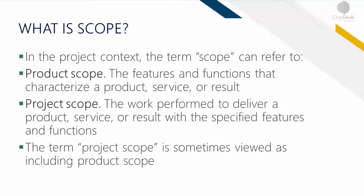In the real world, you typically just create the scope, you have the WBS, and then you move forward as a project manager, scheduling those tasks in Microsoft Project Schedule or any other software. In the project context, the term scope can refer to the product or the project. Product scope refers to the features and functions that characterize a product, service, or result. Whereas project scope refers to the work performed to deliver a product, service, or result with the specified features and functions. Project scope is sometimes viewed as including the product scope as well — just a subtle difference between the two.